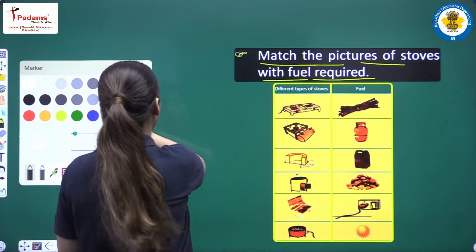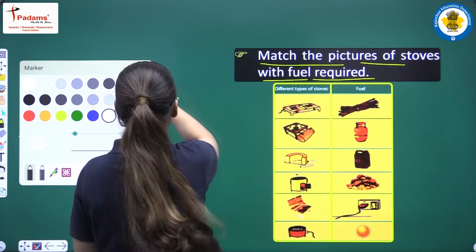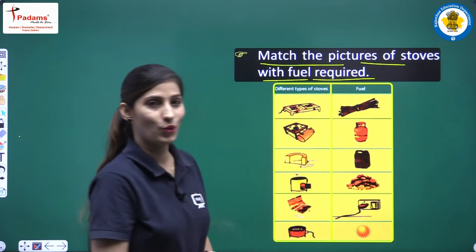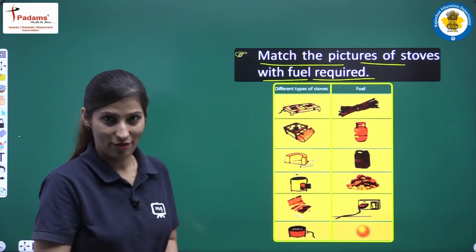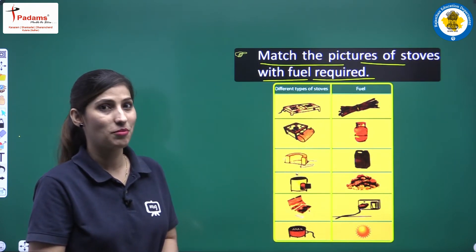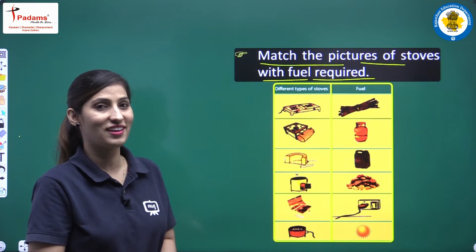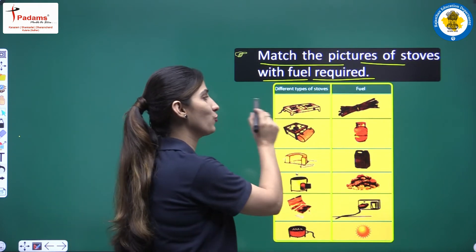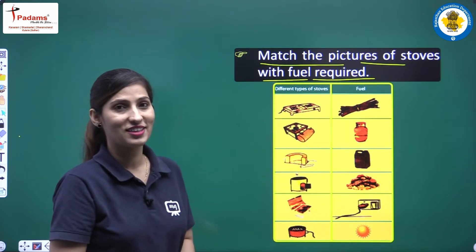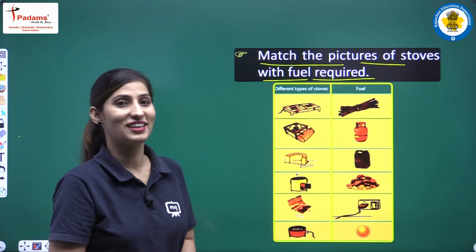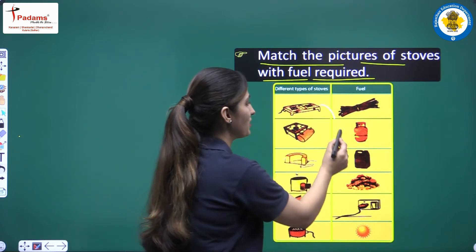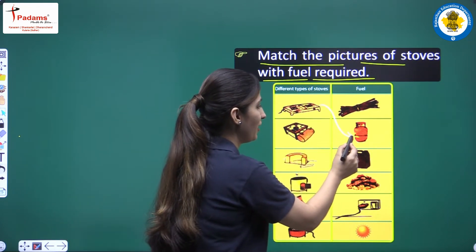The first one is a gas stove. Have you ever seen one? It's what we have in our kitchen where mom cooks food. For this type of gas stove, what do we need? We need a gas cylinder, right? So we will match it here.